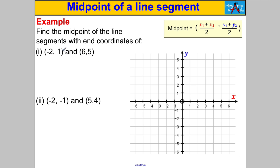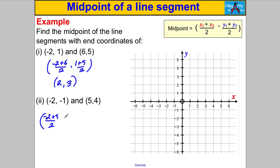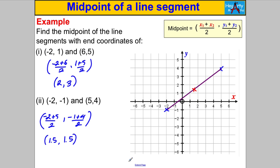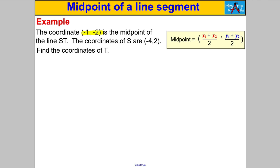Next one — same approach. For (−2, 1) and (6, 5): x-coordinate: −2 + 6 = 4, divided by 2 = 2. y-coordinate: 1 + 5 = 6, divided by 2 = 3. Midpoint is (2, 3). For (−2, −1) and (5, 4): x-coordinate: −2 + 5 = 3, divided by 2 = 1.5. y-coordinate: −1 + 4 = 3, divided by 2 = 1.5. Midpoint is (1.5, 1.5). Let's check: plotting (−2, −1) and (5, 4), the midpoint (1.5, 1.5) does look correct.